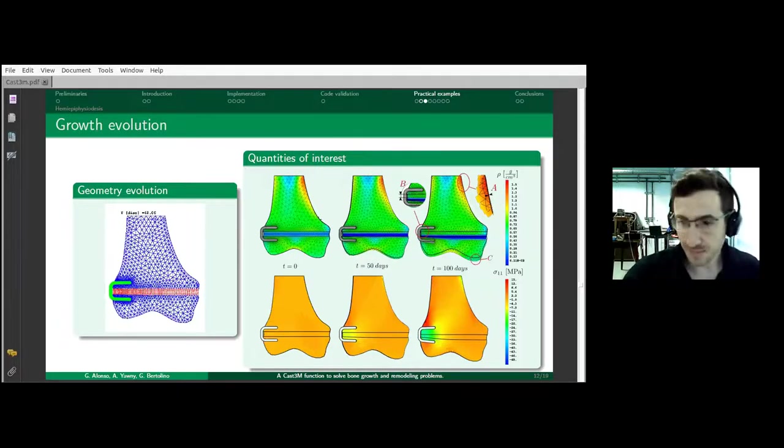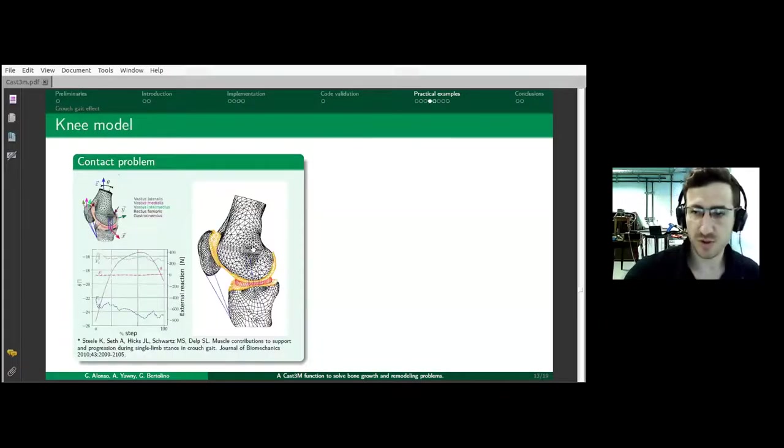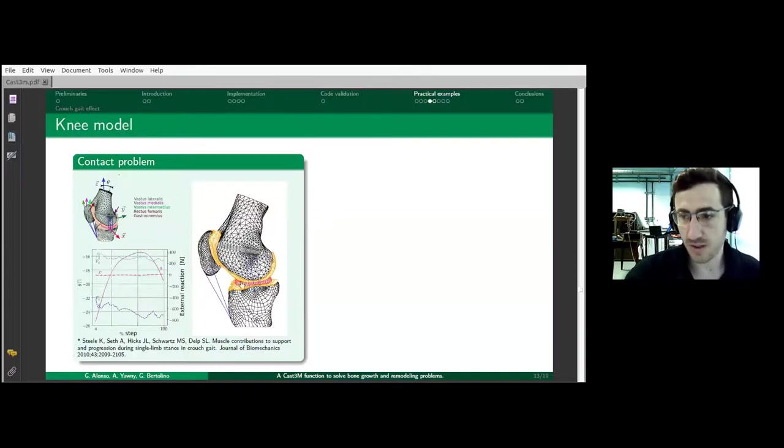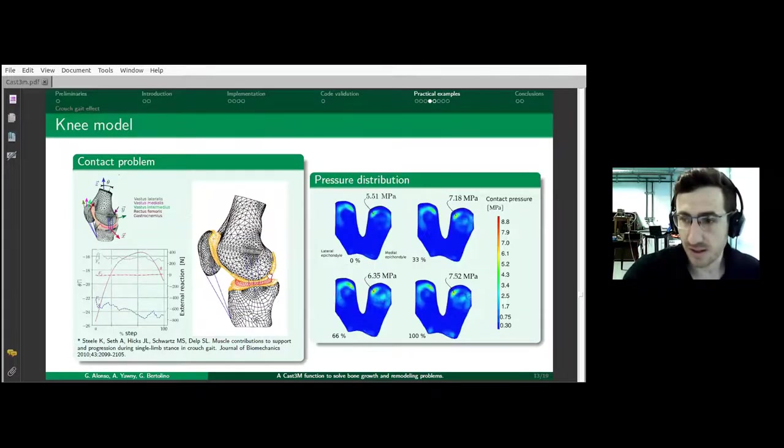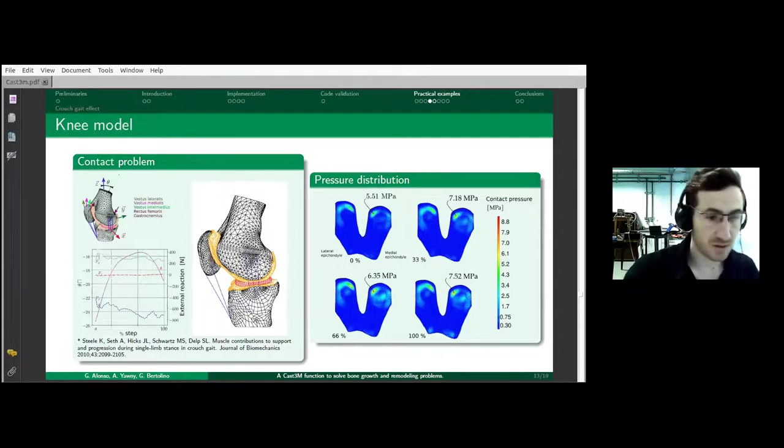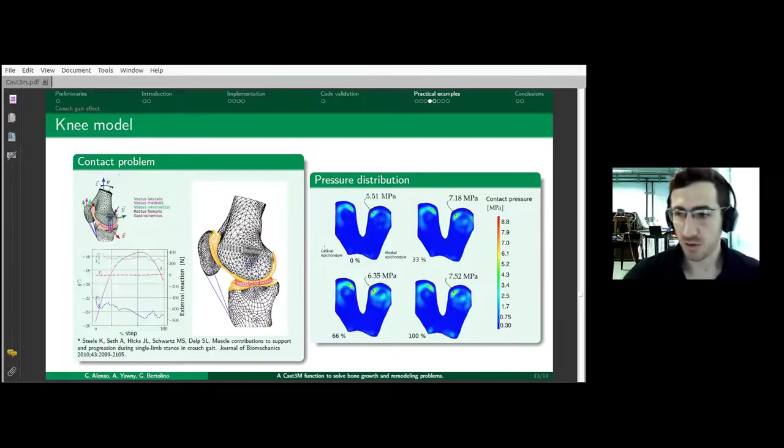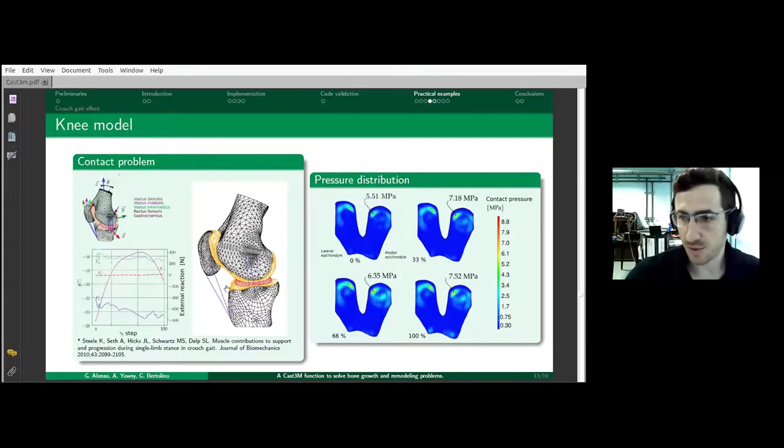A more complex problem is to integrate biomechanical data into this software, because we have to compute the efforts on the knee due to walking, for example. In this case, you see we have solved the contact problem of the knee when different loads due to several muscles act on the joint. The solution of this problem is a stress distribution that we can use as an input to compute growth. After computing this, we can isolate the femur from the model, apply our software, and compute.